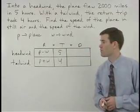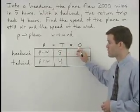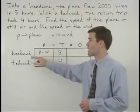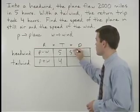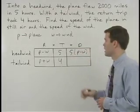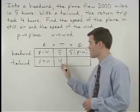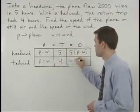So based on our formula, rate times time equals distance, the distance for our headwind trip is five times parentheses p minus w and the distance for our tailwind trip is four times parentheses p plus w.